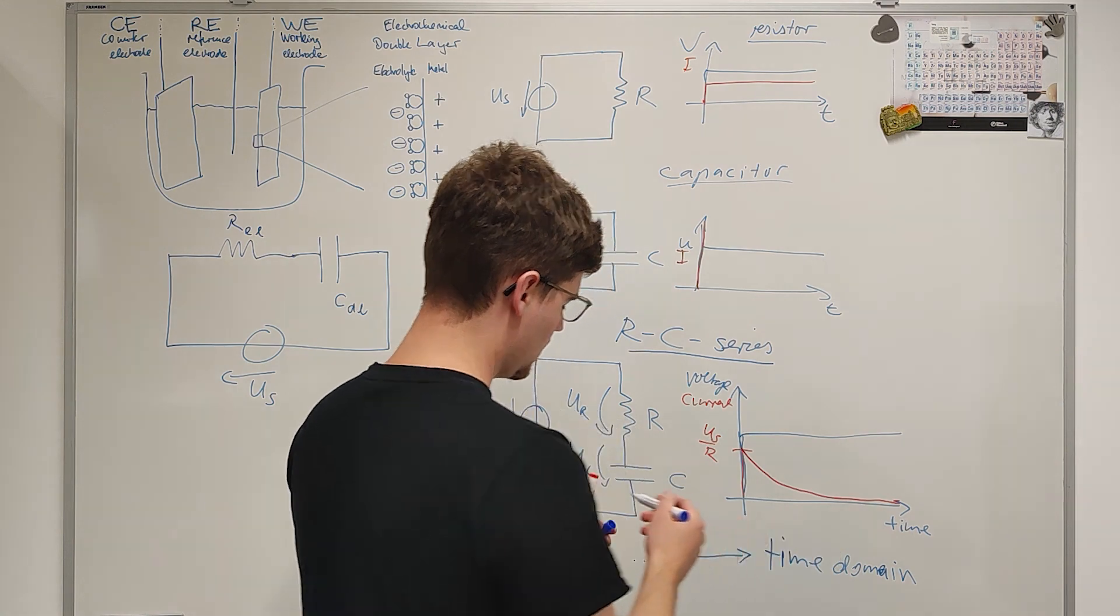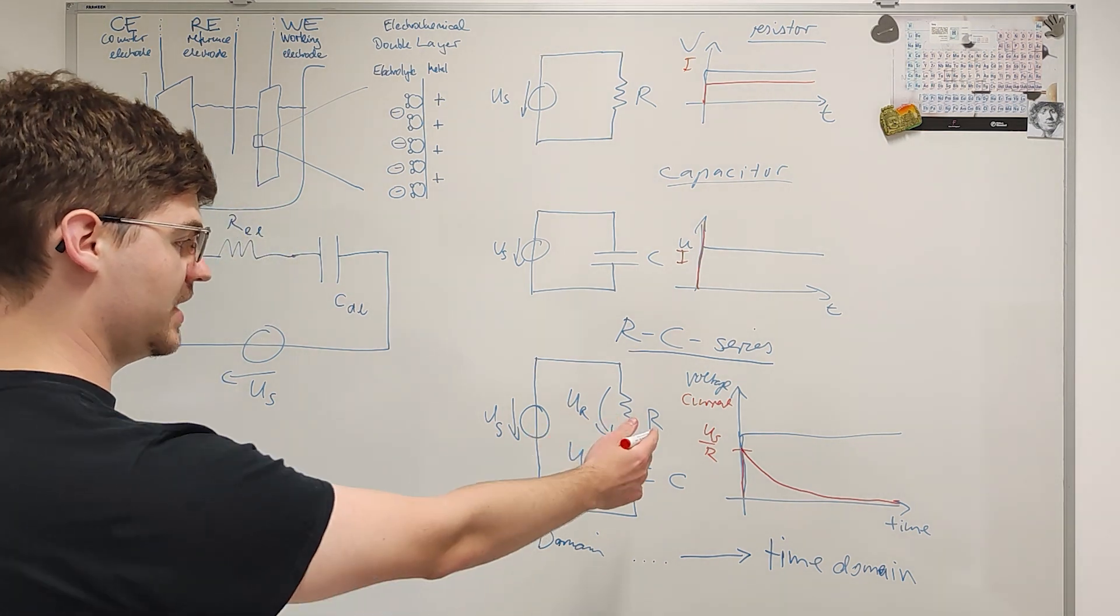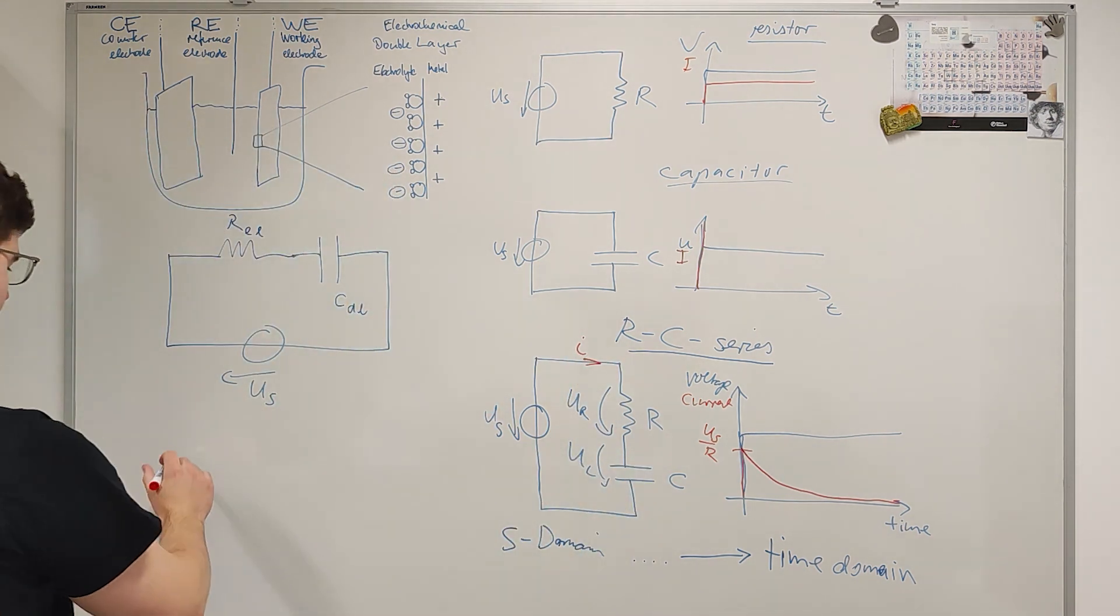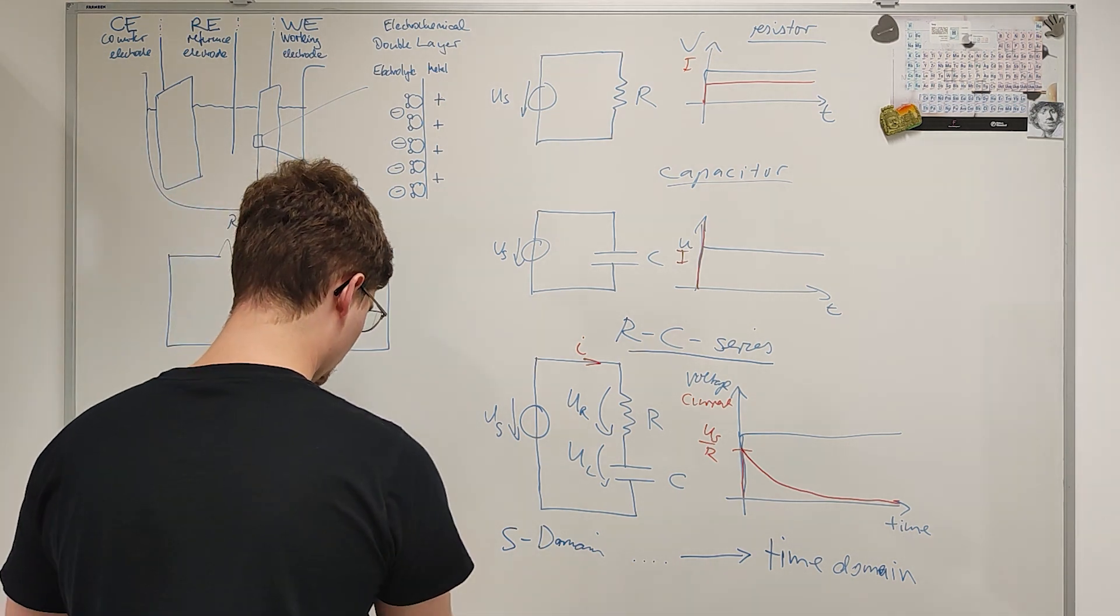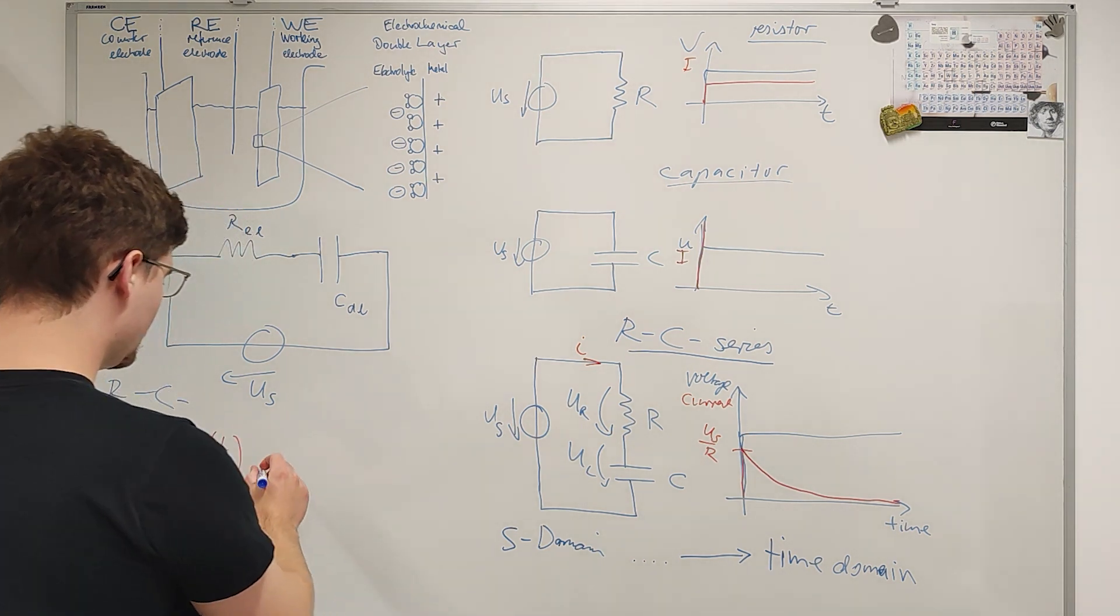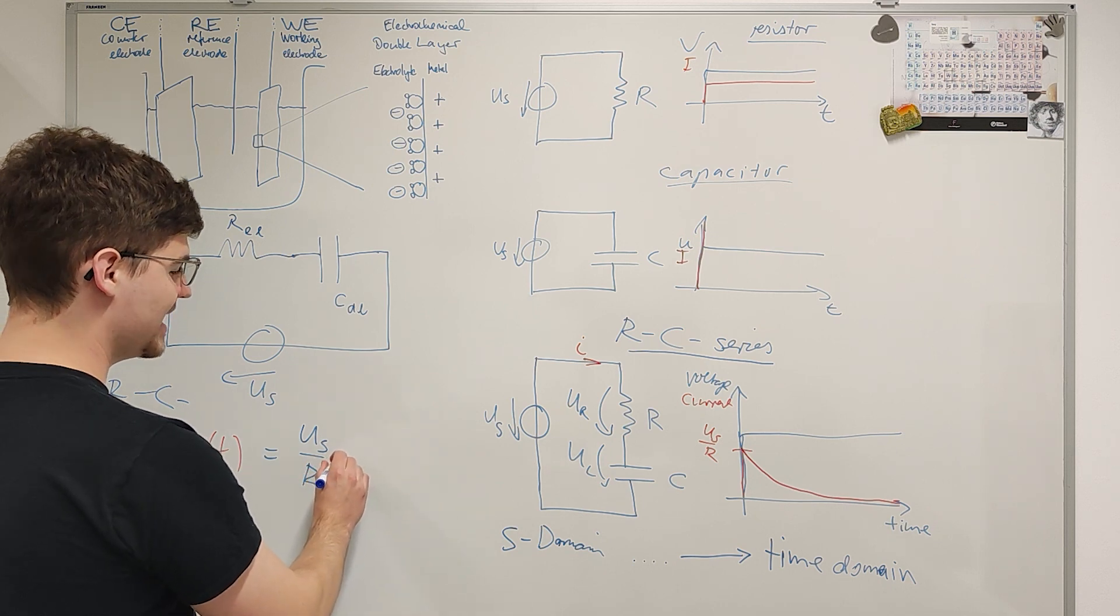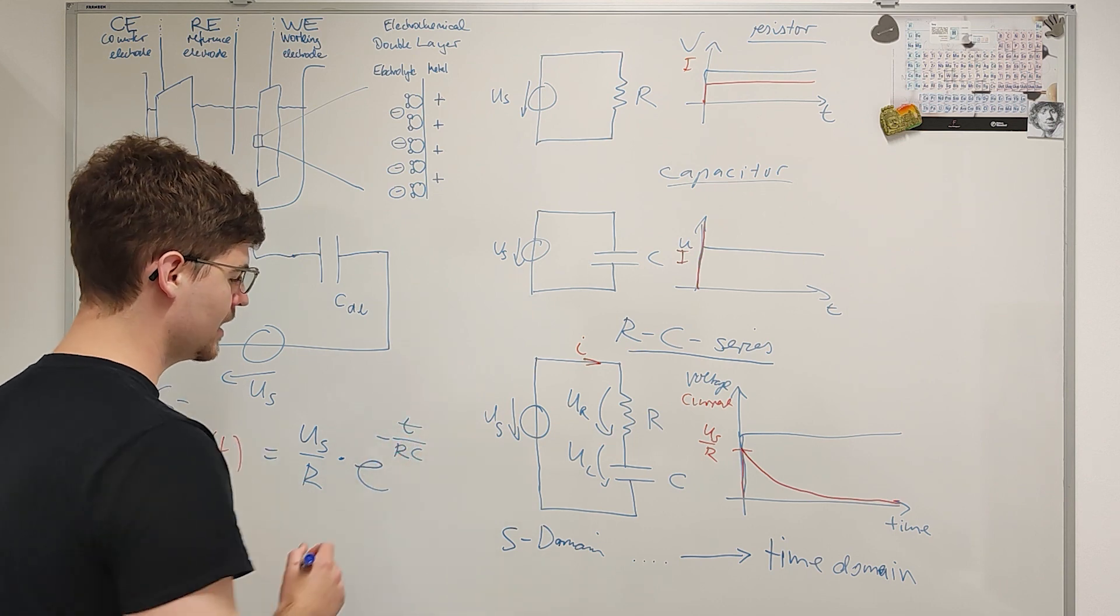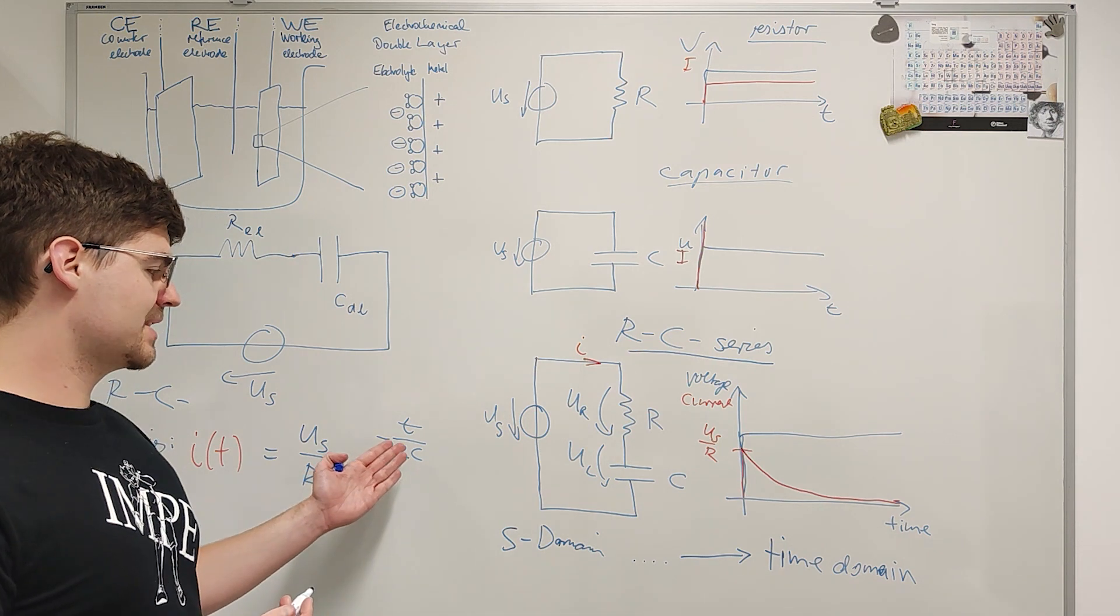Once you go into the time domain, the current that you have there in this circuit flowing is i, and this current for the RC series is equal to the initial current step, us over R times an exponential function. And this exponential function is e to the minus t over RC. Now, this term, of course, it's a falling exponential function. We've already figured that out. But how fast it falls is governed by this RC term here.